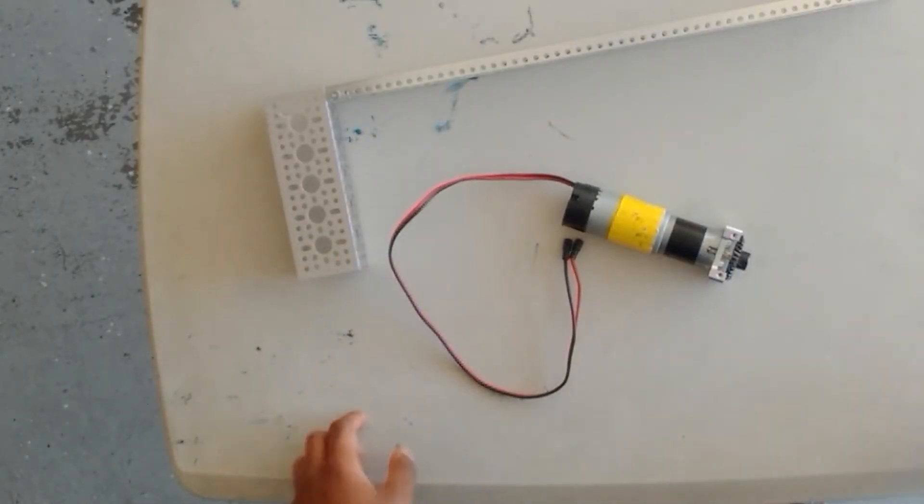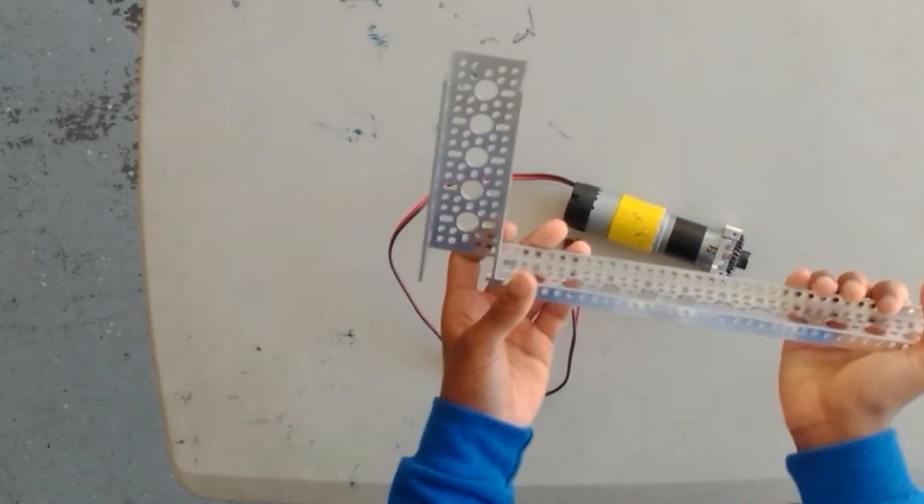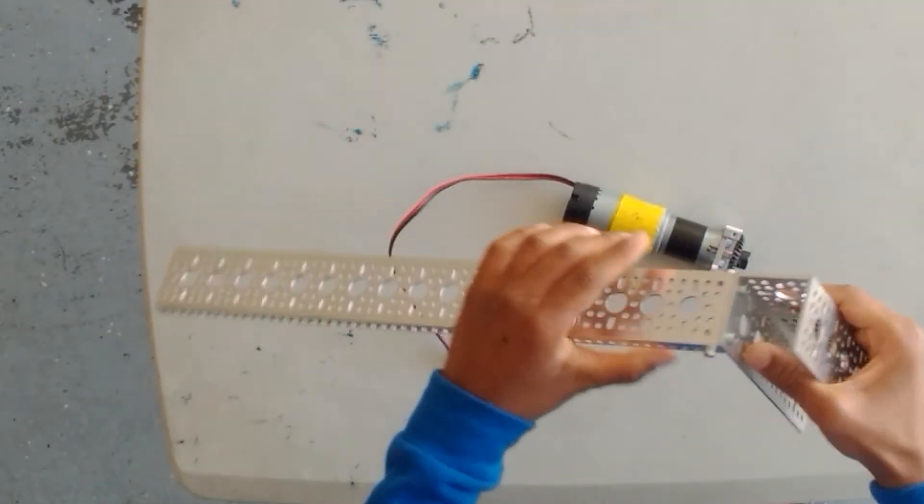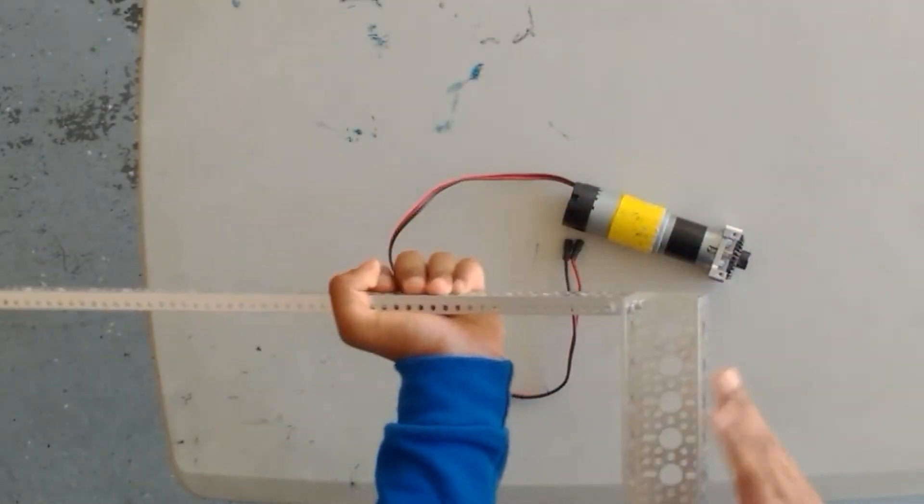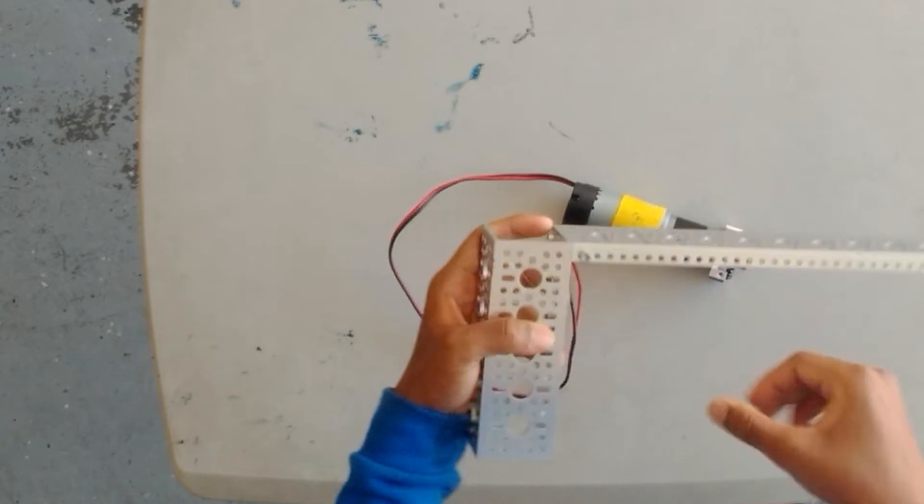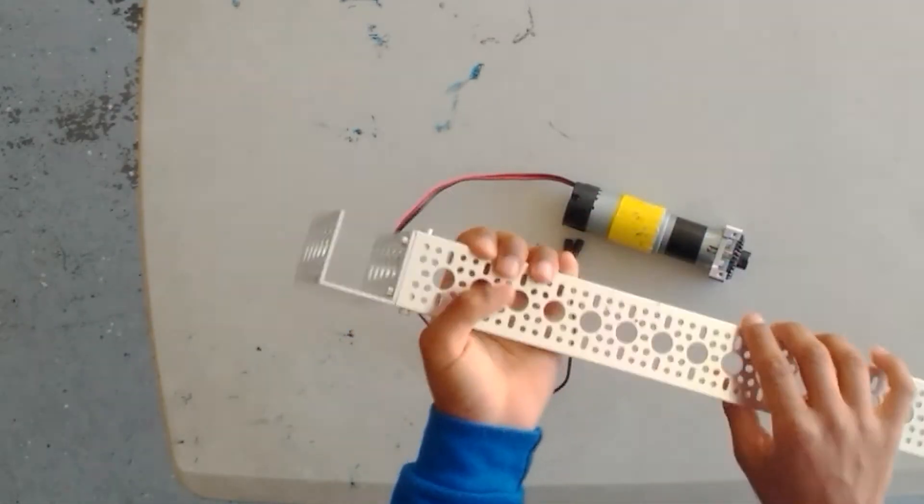Here is another build system we commonly use on our FTC robots. This build system is called GOBUILDA and it primarily revolves around these U-channels. These are U-channels and these are low side U-channels. And they connect mostly using metal mounts which make these much stronger than the REV parts. However, these can be a little bit pricey.